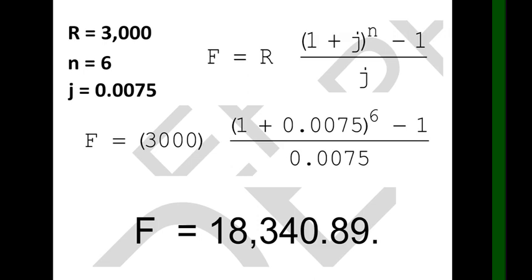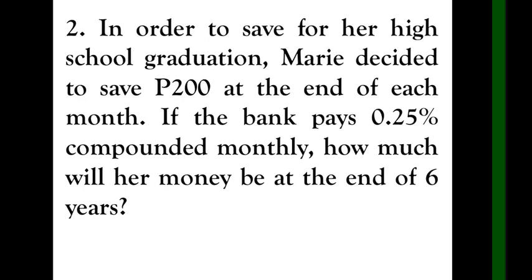Let's have another example. In order to save for her high school graduation, Marie decided to save 200 at the end of each month. Every month Marie will save 200. If the bank pays 0.25% compounded monthly, how much will her money be at the end of six years? So Marie has been saving at the bank since she was grade seven and will take it out in grade 12, that's six years. She pays 200 pesos every month, and the bank gives 0.25% compounded monthly. So how much money will she have saved including the interest?